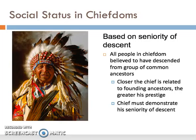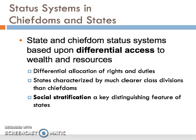Kinship and descent play an important role in defining social status in chiefdoms. All people in a chiefdom are believed to have descended from a group of common ancestors. The closer the chief is related to the founding ancestors, the greater his prestige. To justify his status, the chief must demonstrate his seniority of descent. In chiefdoms and also states, status systems are based on differential access to wealth and resources. This means we see the emergence of inequality or stratification based on differential allocation of rights and duties. States are characterized by much clearer class divisions than chiefdoms. Social stratification — the uneven distribution of resources and privileges in a group or social system — is a key distinguishing feature of states.